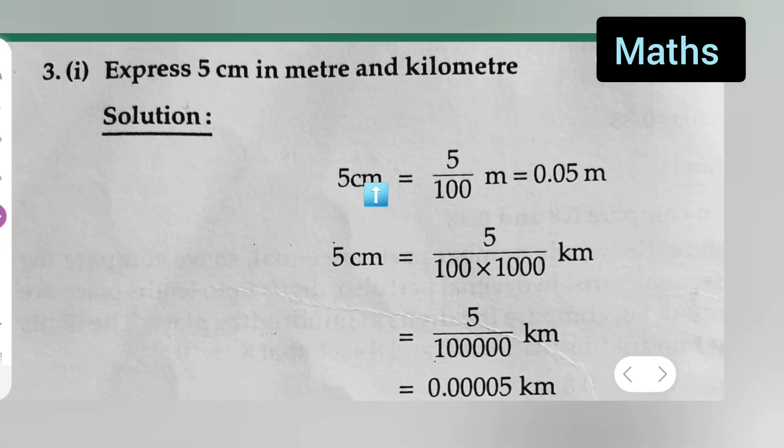So let us take first 5 centimeter is equal to 5 upon 100 meter, which is equal to 0.05 meter.